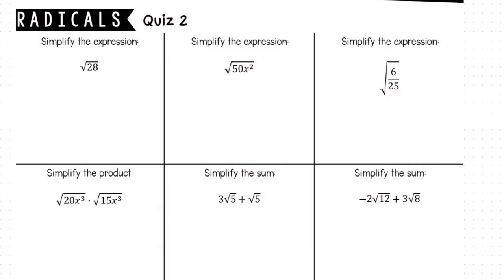In the first question, we're asked to simplify the square root of 28. We can factor 28 into 7 times 4. Since the square root of 4 is a perfect square, we can rewrite this as the square root of 7 times 2, or in standard form, 2 times the square root of 7.